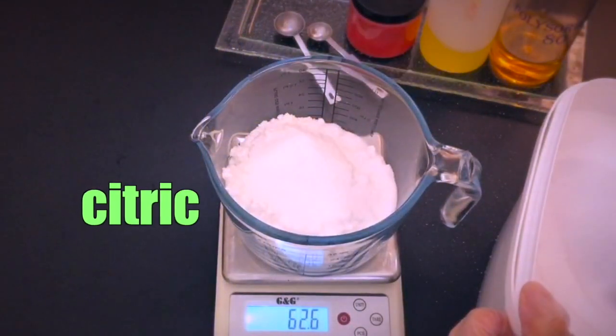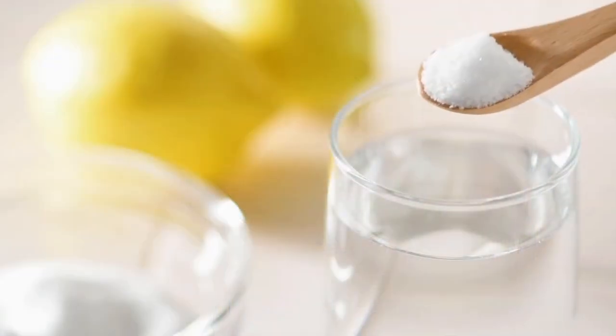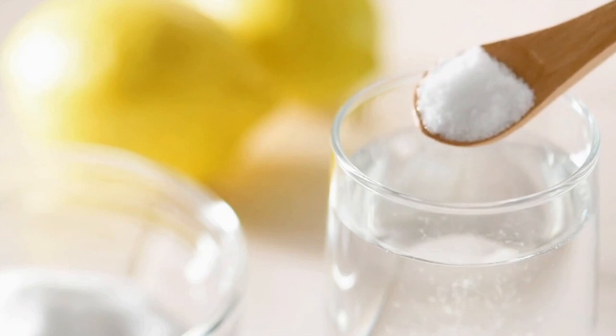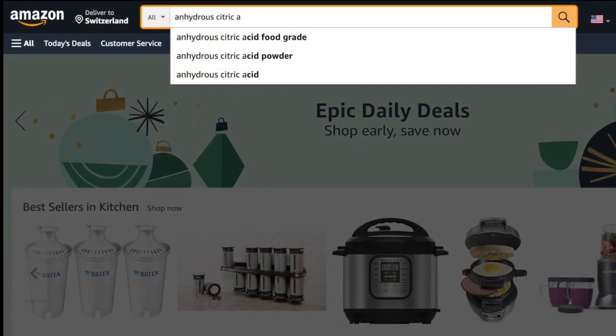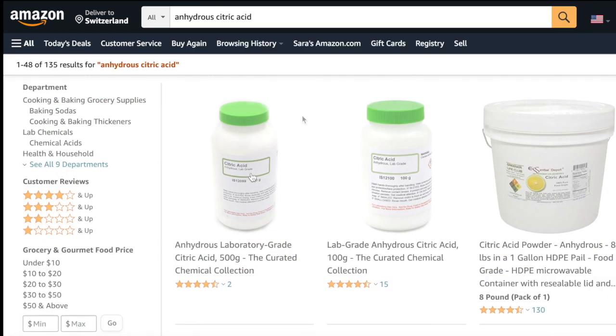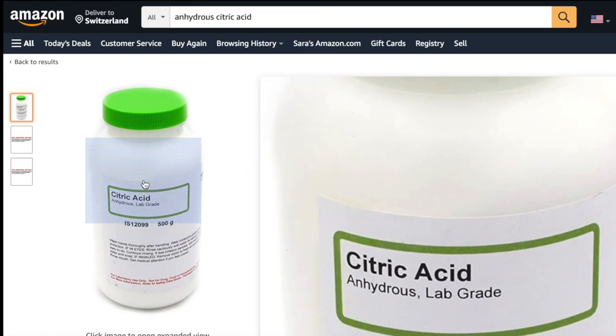And to complement the baking soda we add citric acid, a sharp tasting crystalline acid present in the juice of lemons and other sour fruits. Use the anhydrous version meaning that there is no water in it. That way you prevent it from fizzing when it attracts moisture.